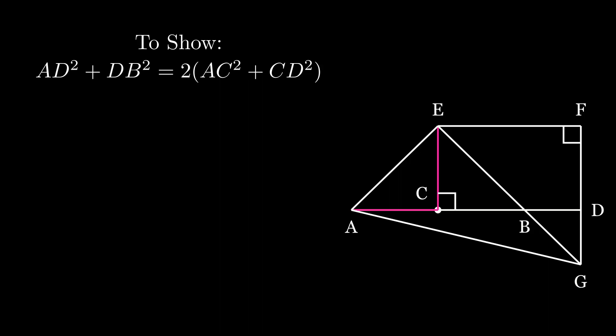Our strategy now is to show how different angles are related as well as how different lines are related. We will then use the Pythagorean theorem to prove what we are seeking to prove. We know that AC is equal to CE, so we have an isosceles triangle, therefore angle CAE and angle AEC are equal. Angle ECA is a right angle, therefore both angle CAE and angle AEC together are a right angle.